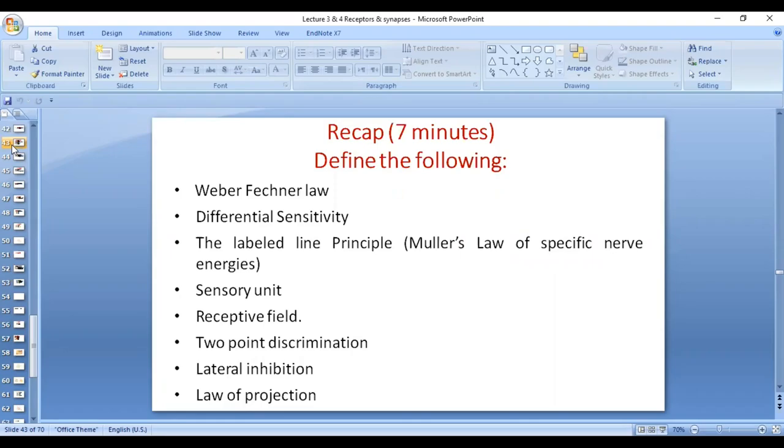Differential sensitivity, the labeled line principle, sensory unit, receptive field, two-point discrimination, and the importance of two-point discrimination in the braille system for the blind, lateral inhibition and its importance for localization of stimuli, law of projection.